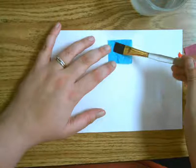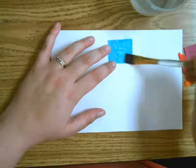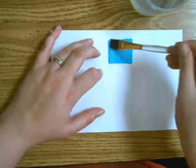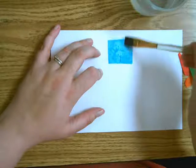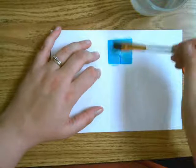Push that paintbrush down onto the tissue, almost like you're painting the tissue onto the paper. We want it really nice and wet so that it sticks to the paper.